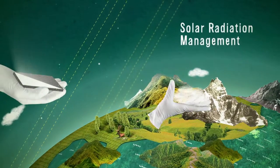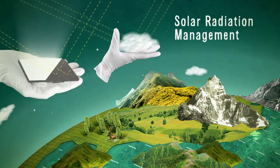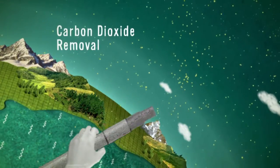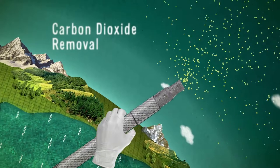Solar radiation management is the process of reflecting the sun's rays back into space, with the result that the climate heats up less. Carbon dioxide removal removes greenhouse gases such as carbon dioxide from the atmosphere.